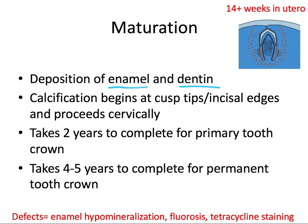It takes two years for a primary tooth crown on average, and four to five years on average for a permanent tooth crown to complete this maturation process — and that's not even including the root, which takes quite a few more years to finish developing. This explains why disturbances and defects are so common during this stage, because the critical time period is much longer and there's a lot more time for something to go wrong.